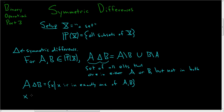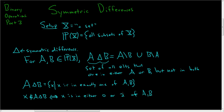So if you have an element X that is not in your symmetric difference, this is equivalent to saying that X is in either 0 or 2 of A, B. So if it's in the symmetric difference, it's in exactly one of A, B. If it's not, it's either in none of them or in both of them. And it turns out that the triangle — the symmetric difference — is a binary operation. It is indeed a binary operation on the power set of capital X, and it's also commutative.